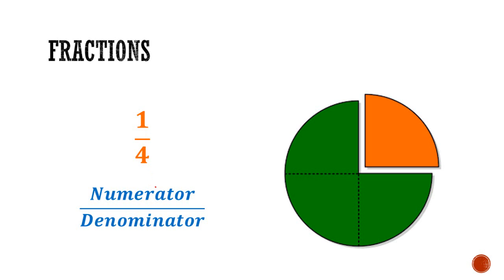The number above this line is called the numerator and the number below the line is called the denominator. The denominator is how many parts the whole is divided into, and the numerator is how many parts we are interested in.